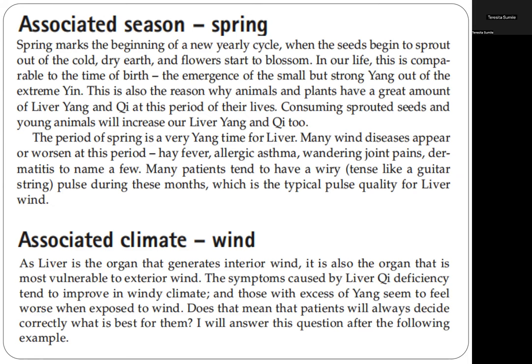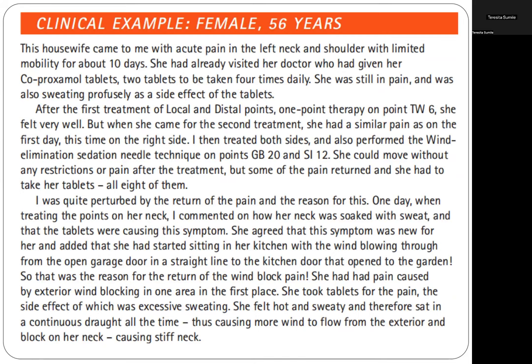Clinical example: a 56-year-old female housewife came to the clinic with acute pain in the left neck and shoulder with limited mobility for about 10 days. She had visited her doctor who prescribed ibuprofen tablets four times daily. She was still in pain and sweating profusely as a side effect of the tablets. After the first treatment using local and distal points plus one-point therapy on Triple Warmer 6, she felt very well. But when she came for the second treatment, she had similar pain — this time on the right side, with the pain shifting from left to right.